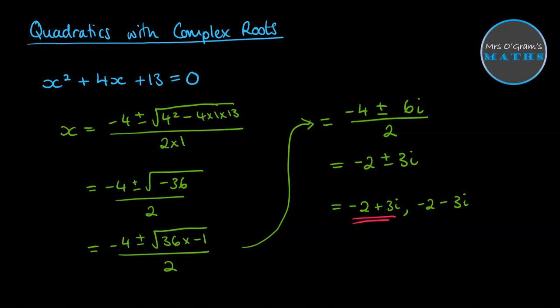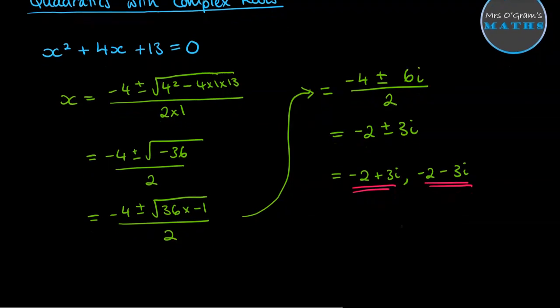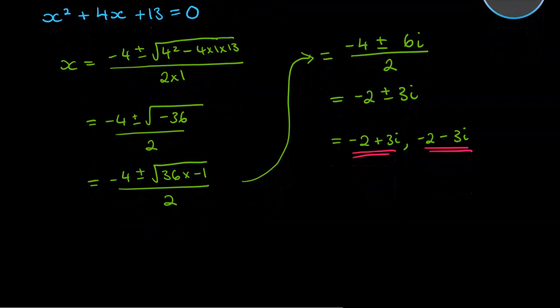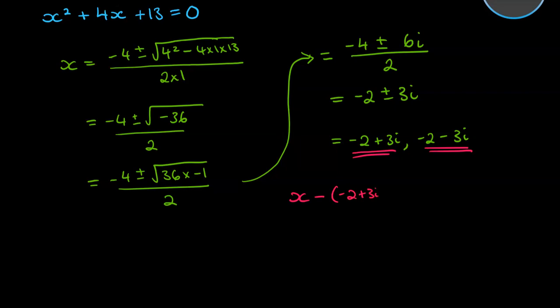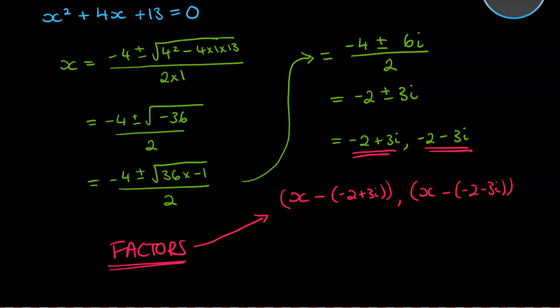Now these two are the roots, and we also often need to think about what it means when we're talking about factors. Just the same as when you found the roots of a quadratic you could also straight away say what the factors were — the same here when we've got complex roots. The factors would be x minus the root. So x minus negative 2 plus 3i is a factor, and so is x minus negative 2 minus 3i. If you multiply those two factors together, you would end up with x squared plus 4x plus 13 equals 0, as we started with.